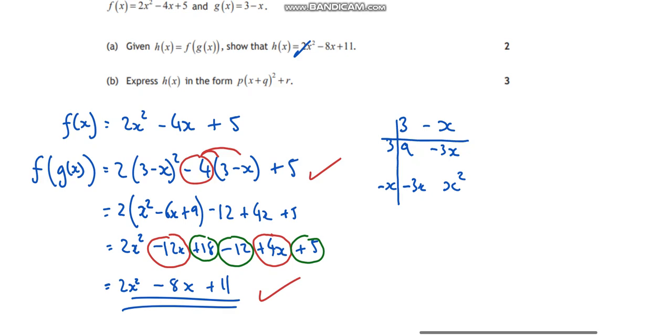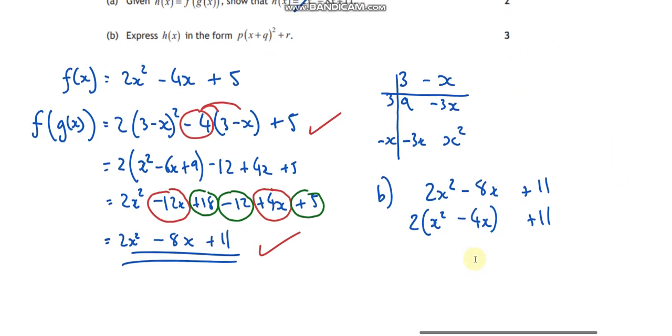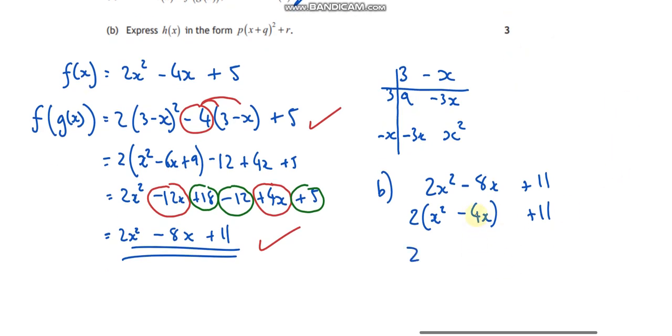The next one, express it in the form like this. So that's your complete the square. So I think I'll put that over here. So with complete the square, the first thing you need to do is get rid of the number in front of your x squared. So we need to get a common factor out of 2. So x squared take away 4x plus 11.